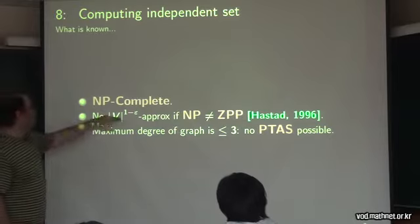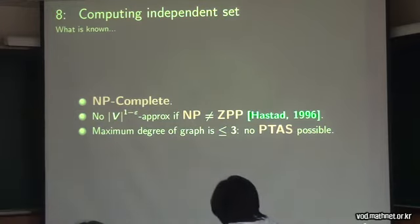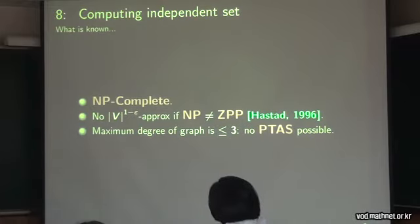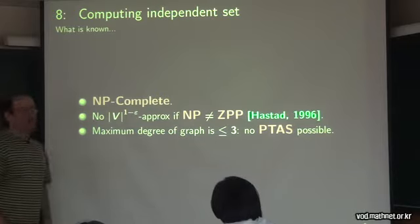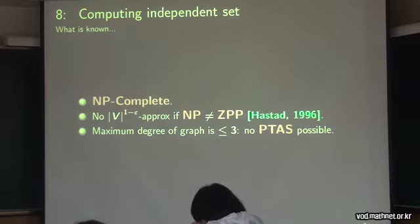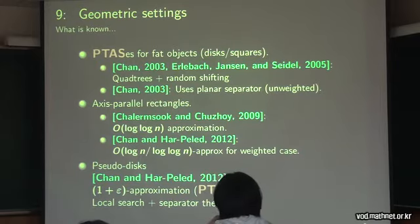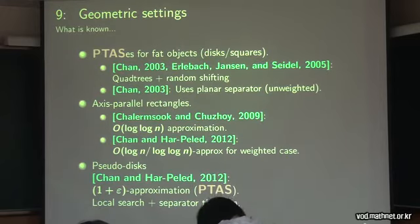The problem cannot even have a 1 plus epsilon approximation if the graph has degree at most 3. Independent set is really a hard problem in general. But the intuition is that if you have an independent set in an intersection graph, the problem is easier. There is quite a bit of work on independent set in geometric settings.